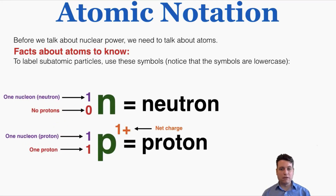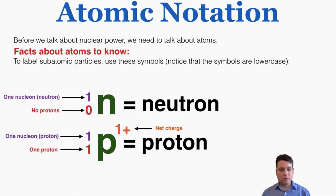Sometimes subatomic particles are emitted from reactions — this happens quite a bit in nuclear energy plants. We need to record neutrons and protons emitted from reactions. A neutron is recorded as lowercase n. Subatomic particles are written lowercase, while elements or atoms start with a capital letter. A neutron is written as ¹₀n — one nucleon, zero protons. A proton is written as ¹₁p — one nucleon, one proton — and carries a net positive charge of +1. This charge detail won't be critical for this unit but provides useful context.